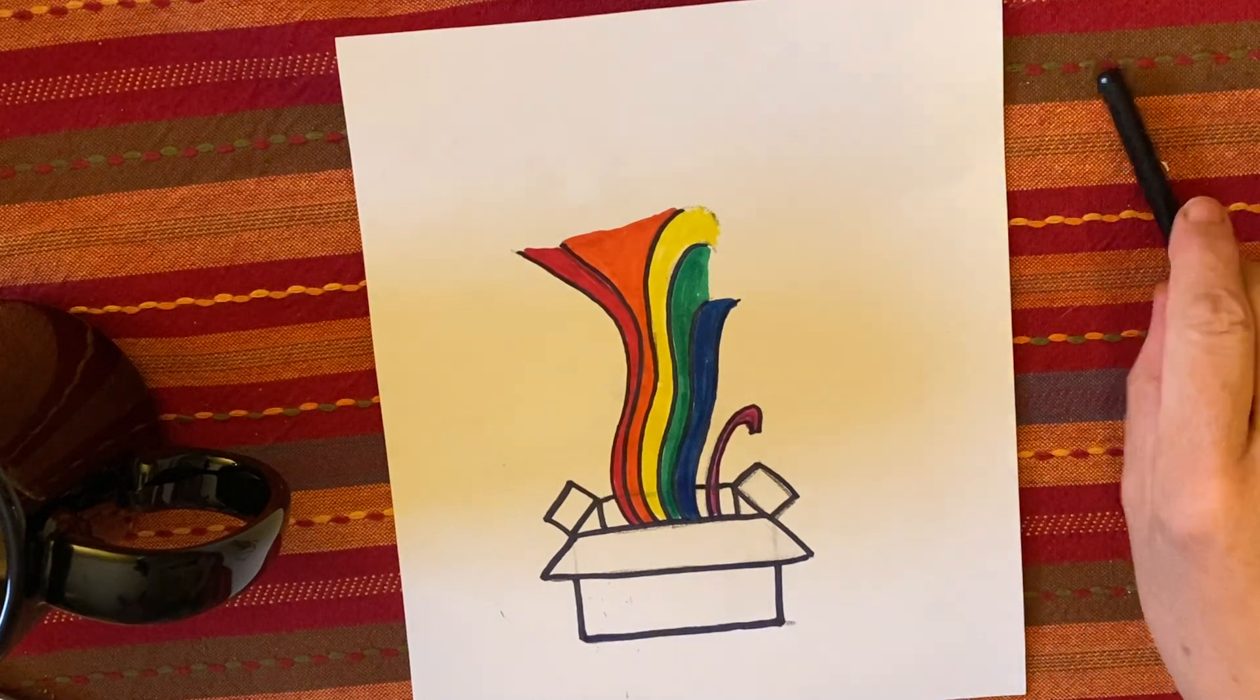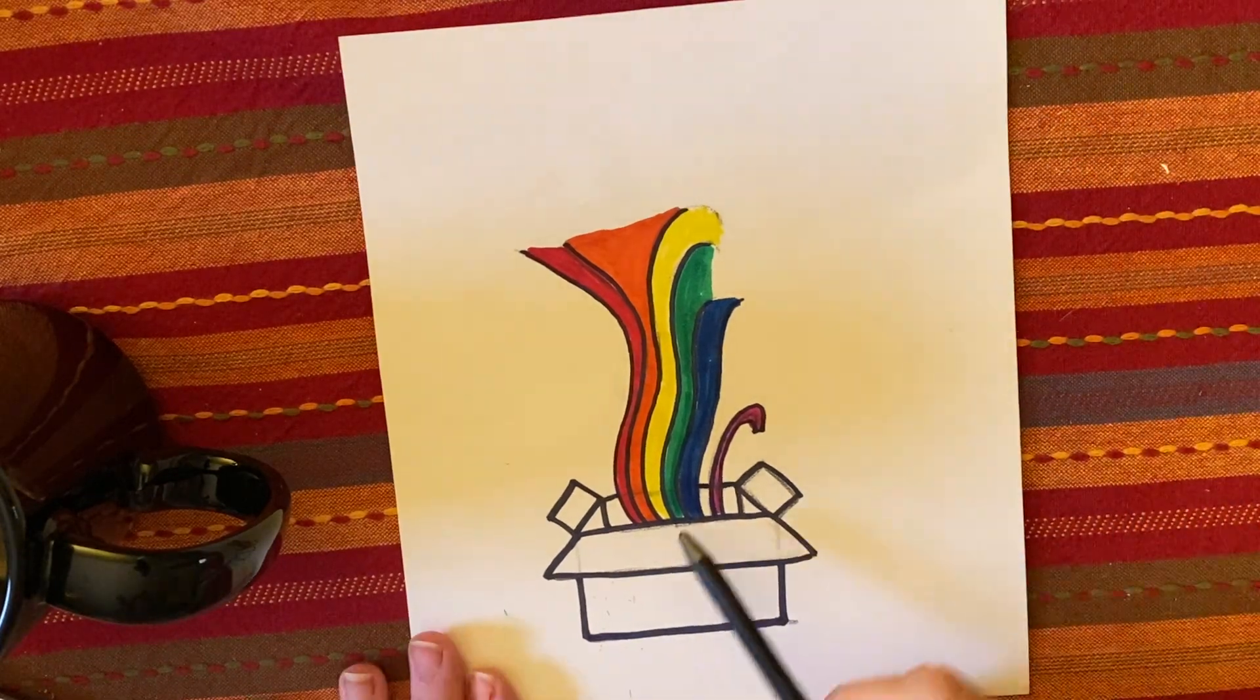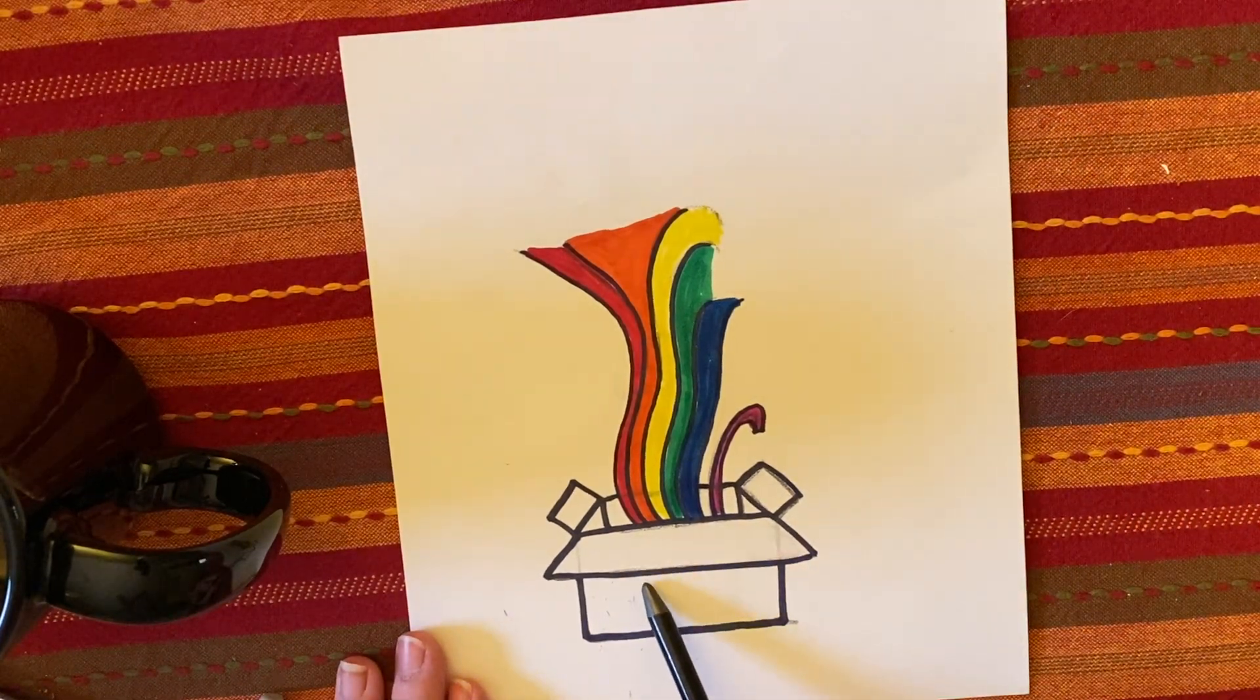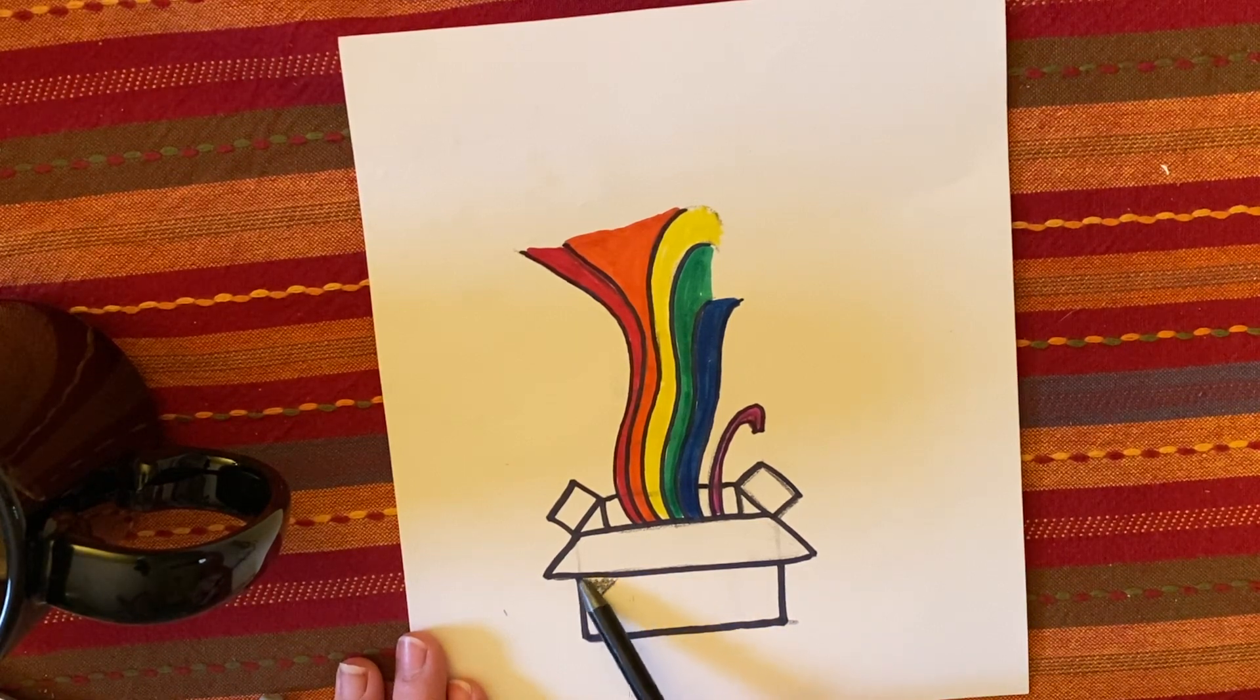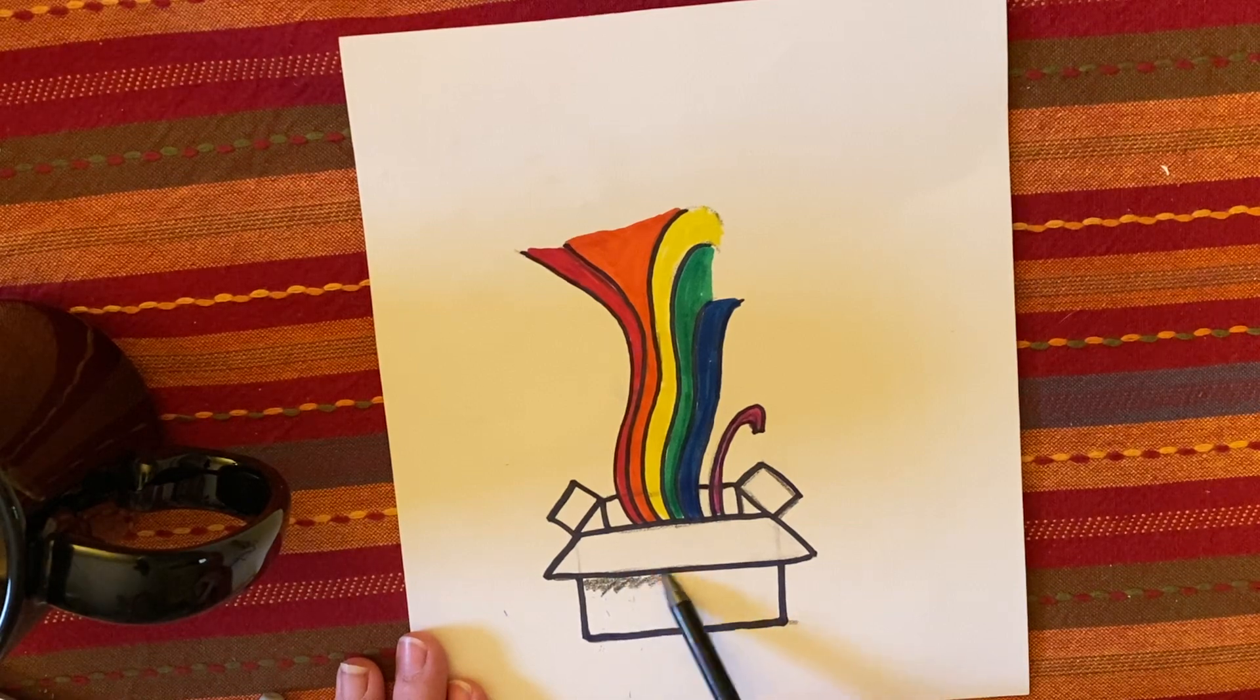So for our value, we need our pencil again. Because this flap is coming over this box, there's a shadow underneath there, but it's just right underneath there. It's pretty dark.